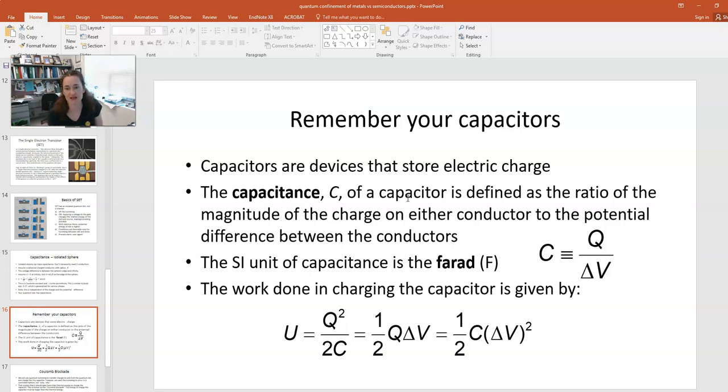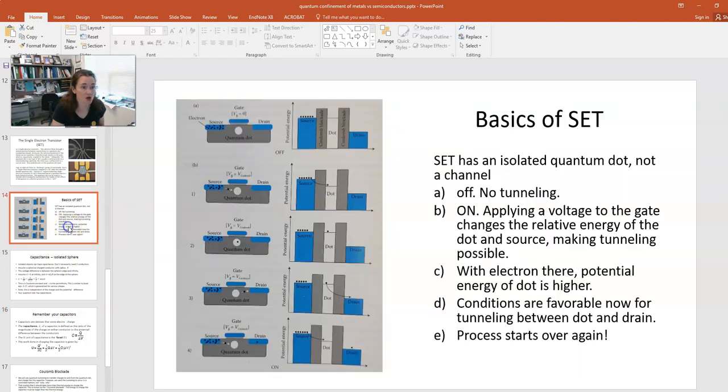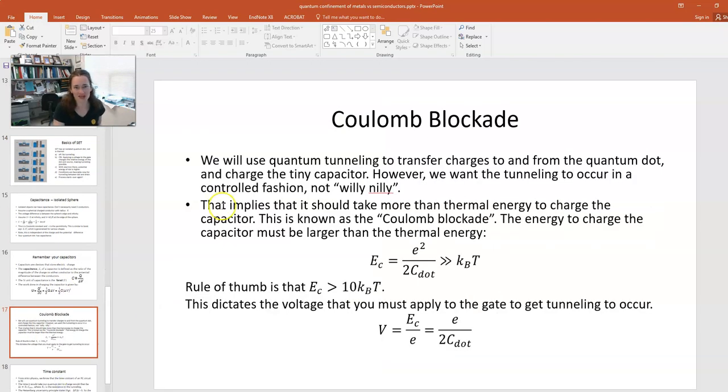and using the capacitance equation, you can plug in and rearrange and have all these other different forms for it. One half Q delta V, one half C delta V squared. Anyway, the potential energy increases for the capacitor as the charge increases. That's exactly what's happening to the little quantum dot when the charge hops from the source to the dot. Remember that the potential energy of the dot went up because it's a little capacitor, and now it's charged.